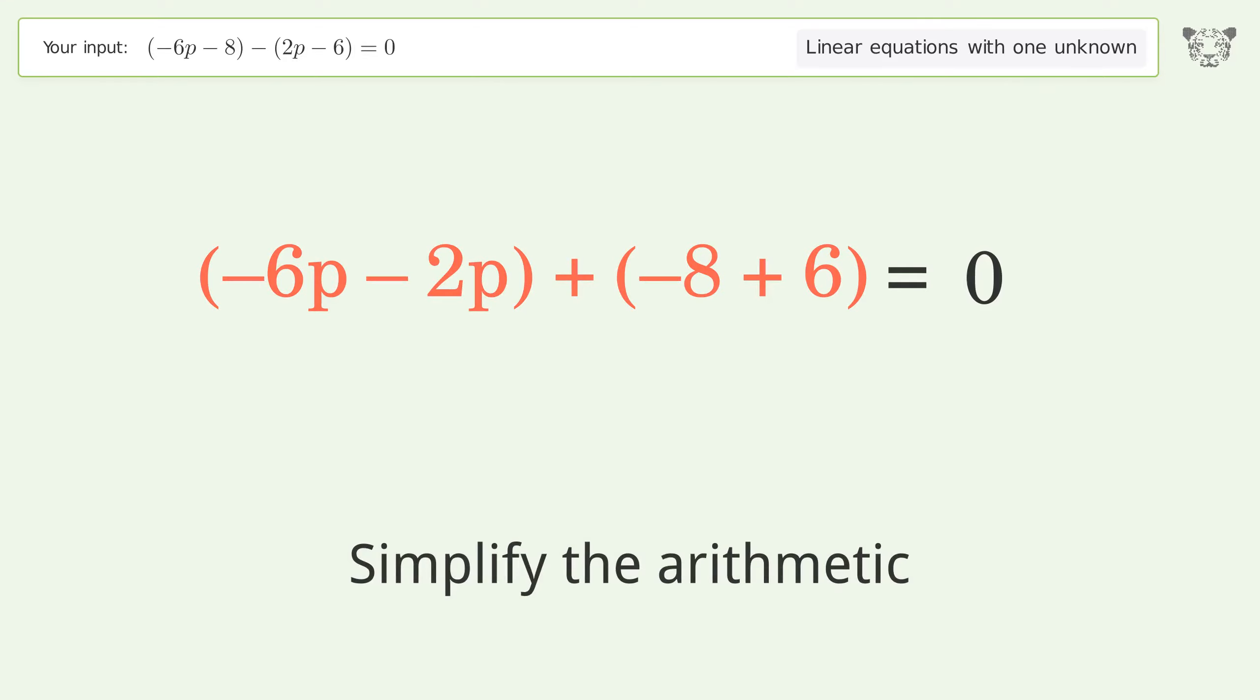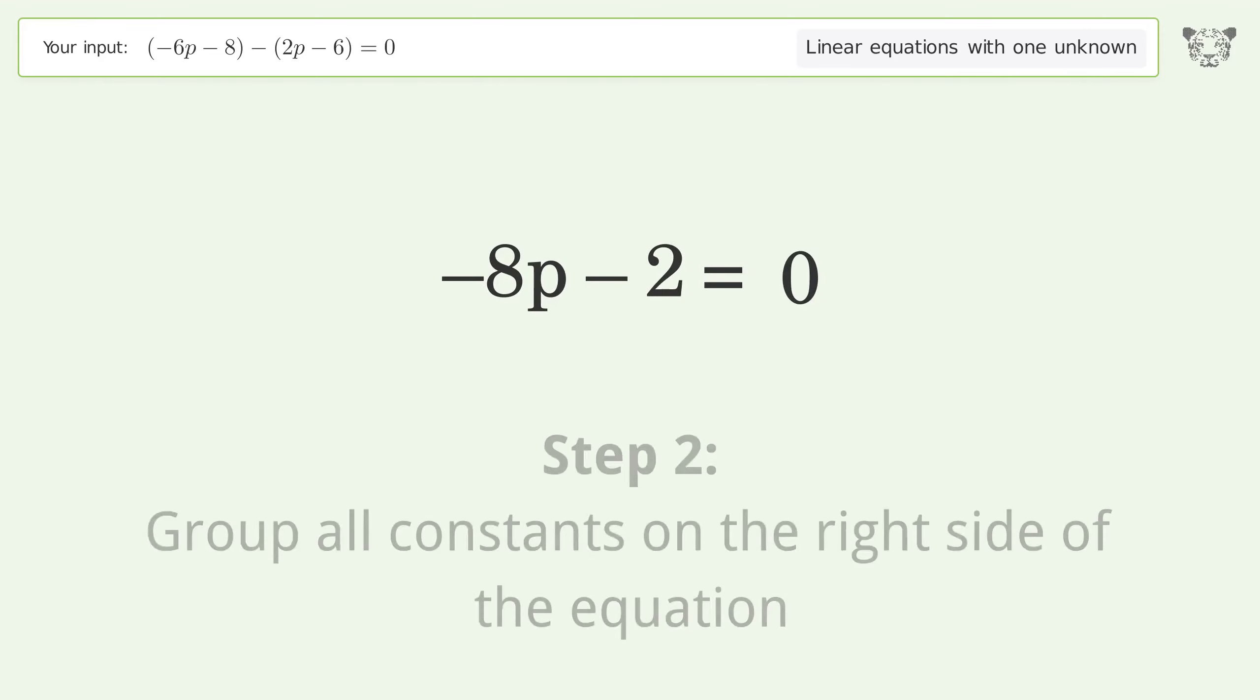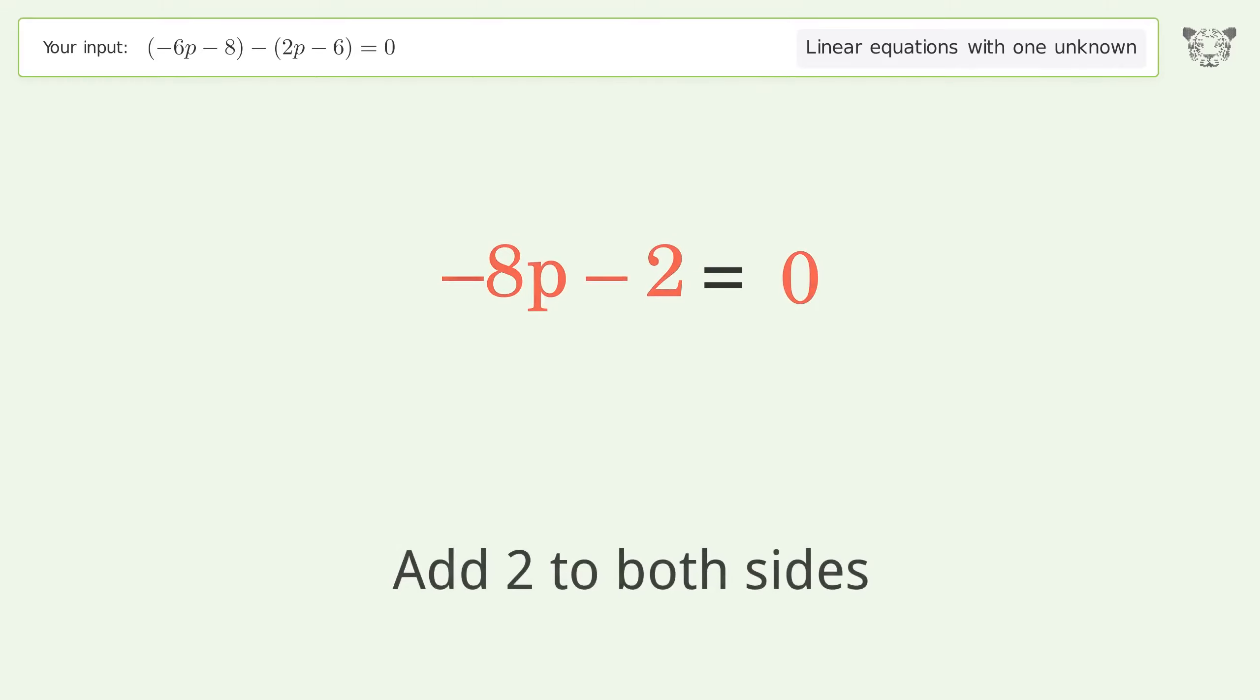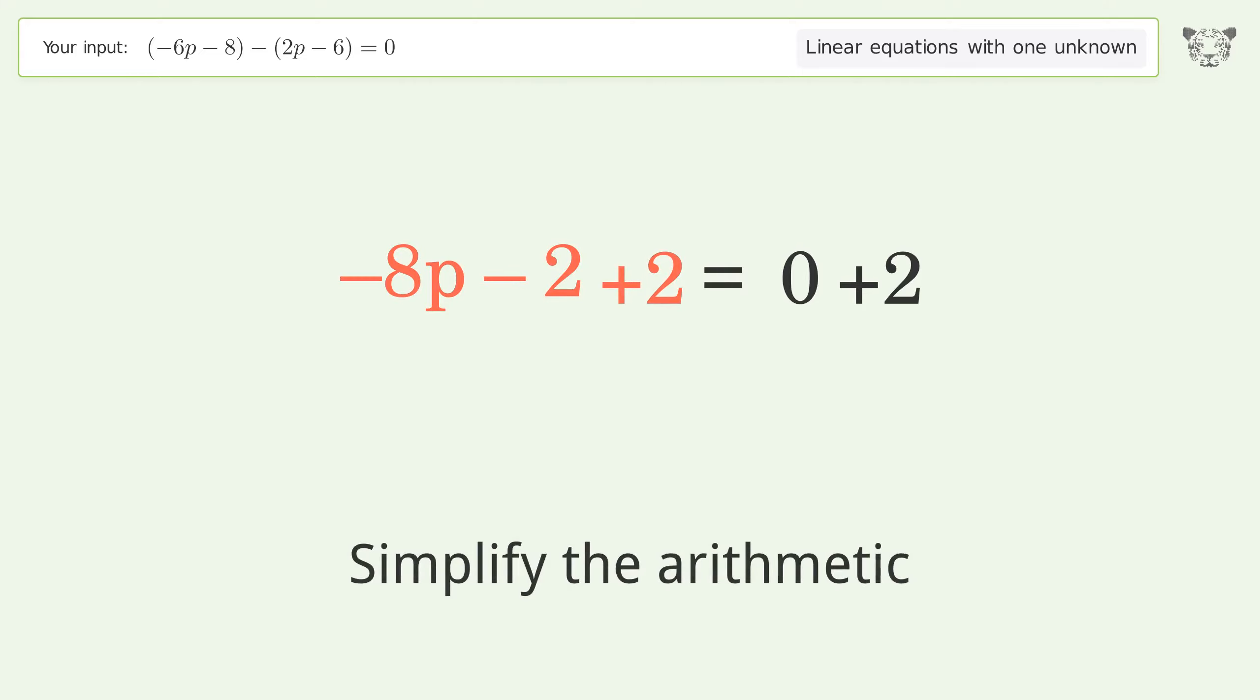Group all constants on the right side of the equation. Add 2 to both sides and simplify the arithmetic.